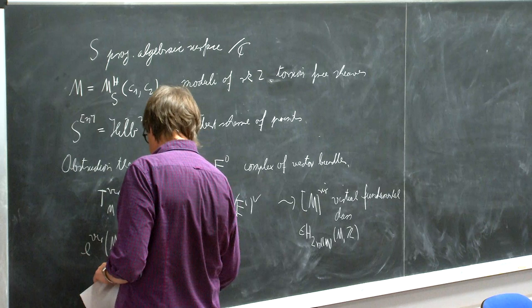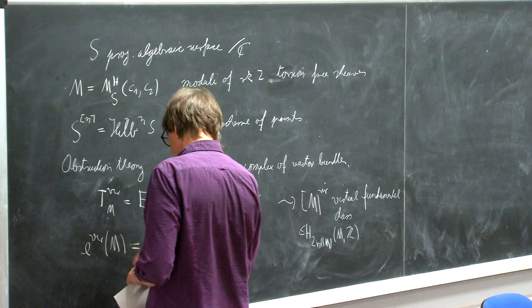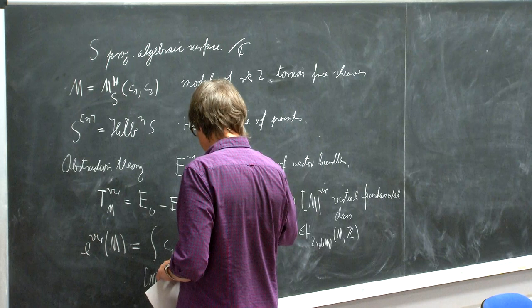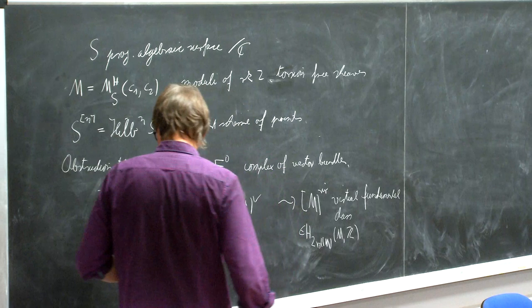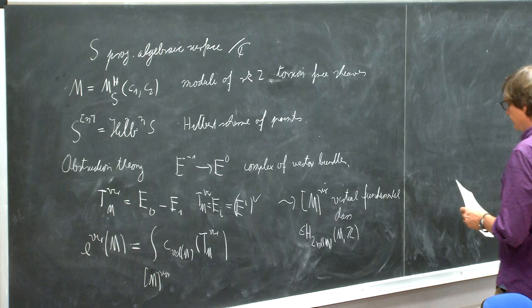The virtual fundamental class will lie in the homology corresponding to the virtual dimension of the moduli space. We can integrate any homology class over this class. In particular we can take the top Chern class of the virtual tangent bundle and we will get some number which is the virtual Euler number. Now we want to see, slightly more explicitly, how this plays out for the moduli space of sheaves.